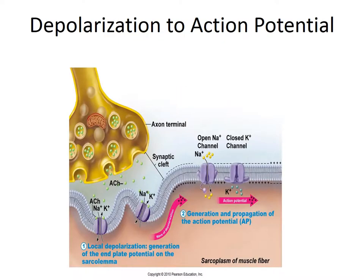Propagation of the action potential then occurs. The positive charge inside the initial patch of sarcolemma changes the permeability of an adjacent patch, opening sodium channels there. Consequently, sodium begins to rush into the membrane there, causing the membrane potential in that region to decrease, and depolarization occurs in that area. Thus, the action potential begins to travel rapidly away from the motor end plate, across the entire sarcolemma, and down into the T-tubules.